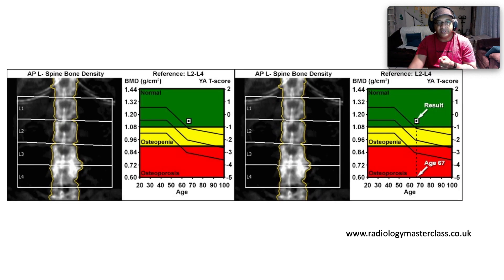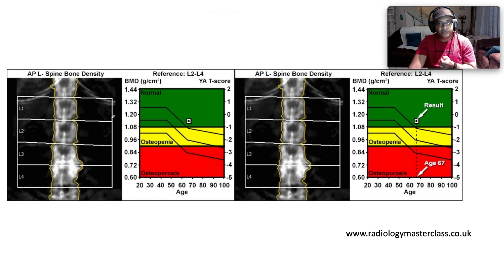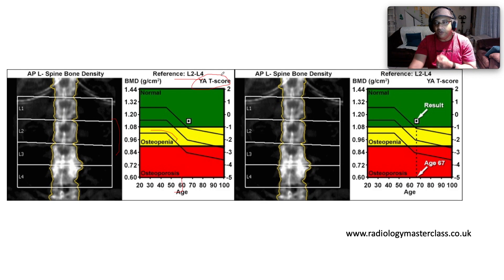Here we see a typical DEXA scan looking at the lumbar spine, using the average BMD from L2 through L4. A normal BMD T-score is down to minus one. Anything between minus one and minus 2.5 is osteopenia. Anything less than minus 2.5 is osteoporosis. The T-score compares the patient's bone mineral density to that of a young healthy female — not age-matched, which would be the Z-score.